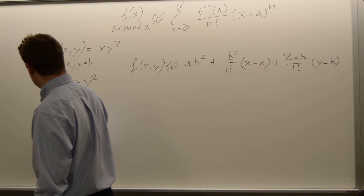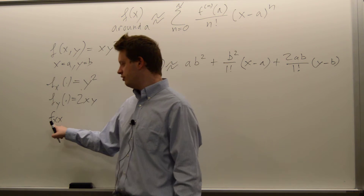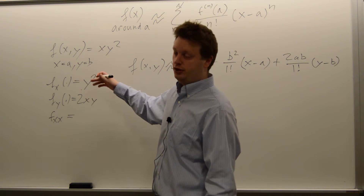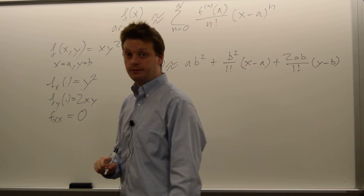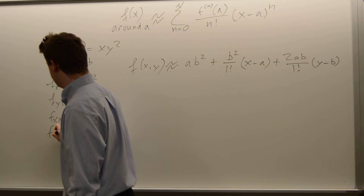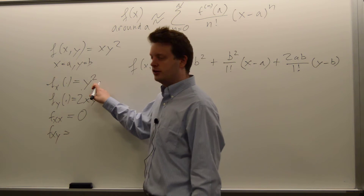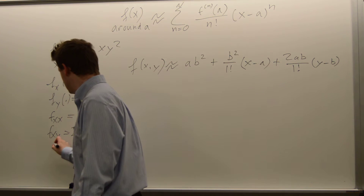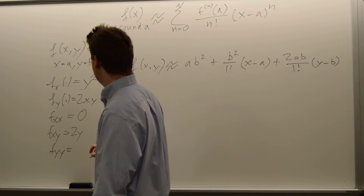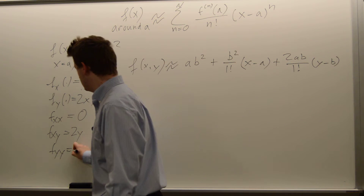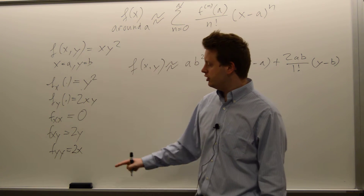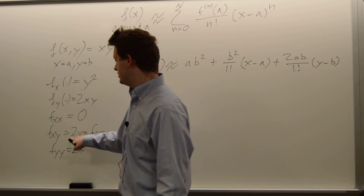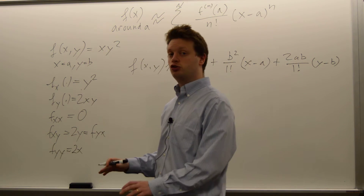Starting with x: the second derivative f_xx is the derivative of y squared with respect to x, which is just zero — that's convenient. Then f_xy, the derivative first with respect to x and then y, gives us 2y. And f_yy, the derivative with respect to y twice, gives us 2x. Note that f_yx equals f_xy, so we don't need to worry about that separately.